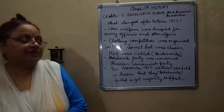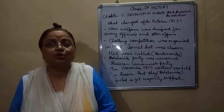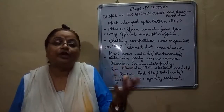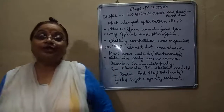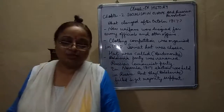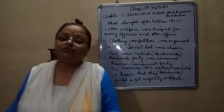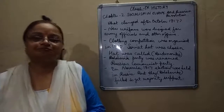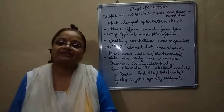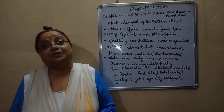The Bolsheviks changed the uniform of the army and tried to bring new innovations. A clothing competition was held for the first time, and from that competition, the Budinov hat was selected — the Budinov hat was chosen as the Soviet hat. The Bolshevik party's name was then changed; it was called the Russian Communist Party. In November 1917, the Bolsheviks conducted elections, but they did not get support.